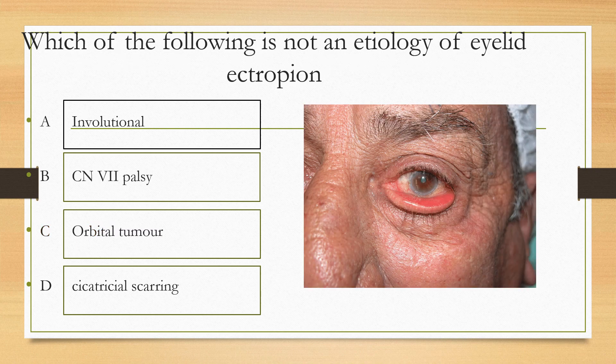Which of the following is not an etiology for eyelid ectropion? Options are: option A involution type, option B 7th nerve palsy, option C orbital tumour, option D cicatricial scarring. The answer is orbital tumour, which doesn't cause ectropion, whereas all the other options can cause ectropion.